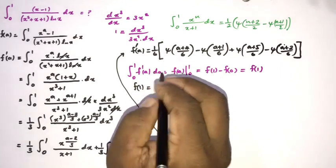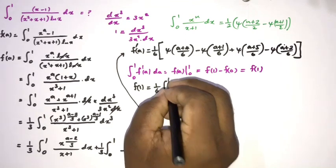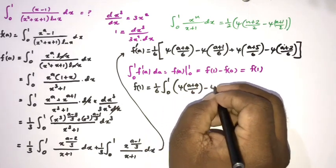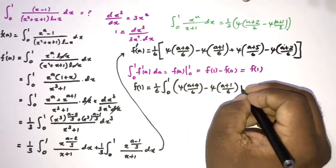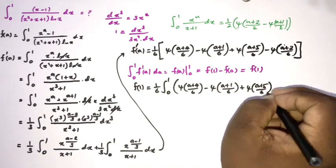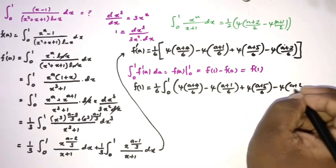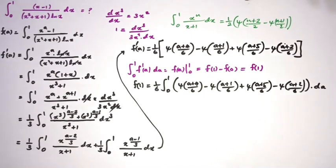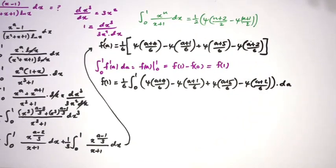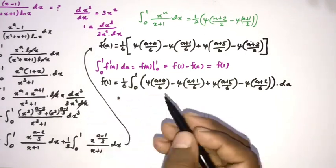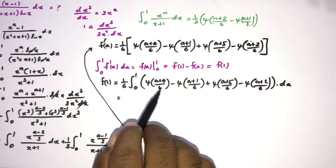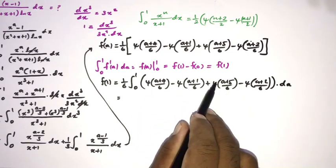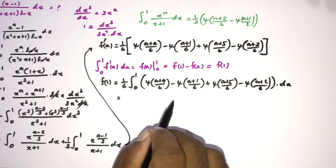So f(1) equals (1/6) times the integral from zero to one of [ψ((a+4)/6) minus ψ((a+1)/6) plus ψ((a+5)/6) minus ψ((a+2)/6)] da with respect to a. When integrating the digamma function, we divide by the coefficient of a, which is 1/6, meaning we multiply by 6. The 6 and 1/6 cancel.